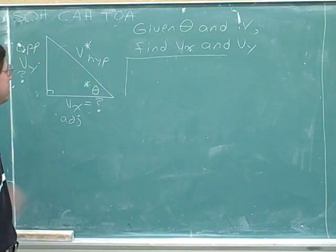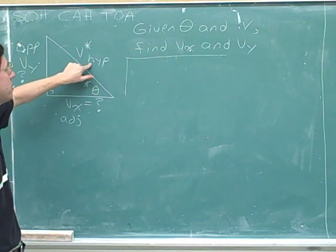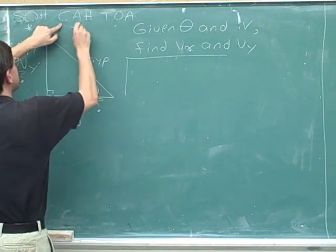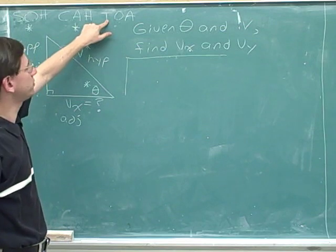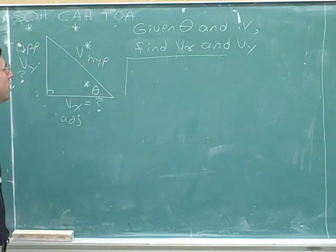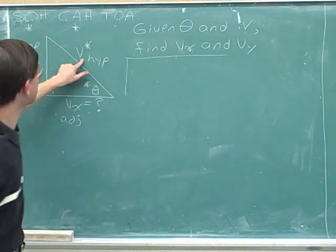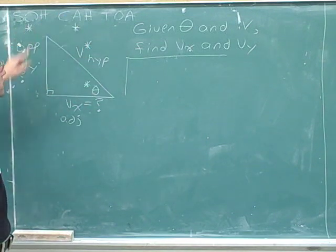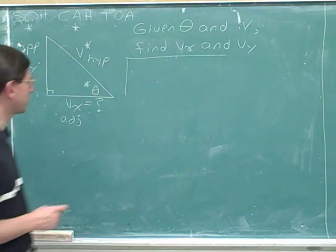Let's make a plan for which trigonometric functions we're going to use. We've been told to pretend we've been given v, the hypotenuse. So we can use the sine and the cosine, because both deal with the hypotenuse. The tangent is not going to be very useful because it does not refer to the hypotenuse. Since sine and cosine both reference the hypotenuse, those are the functions we'll use.